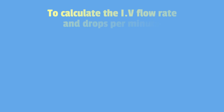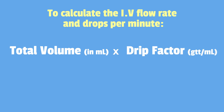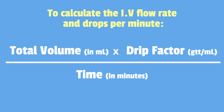Now let's break down the formula. To calculate the IV flow rate in drops per minute, you'll use total volume in mLs times drip factor, or drops per mL, divided by time in minutes. This equals the flow rate, or drops per minute.